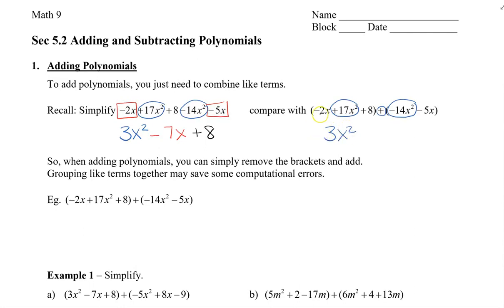And then we're going to combine the like terms: negative 2x. We're still going to apply that middle part where it says add. So we're going to go negative 2x plus negative 5x, and that's negative 7x. And then finally, I have positive 8 and there's nothing else to add, so it's just going to be plus 8.